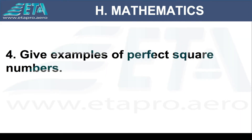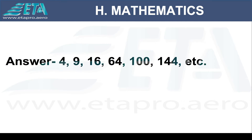Give examples of perfect square numbers. 4, 9, 16, 64, 100, 144, etc.